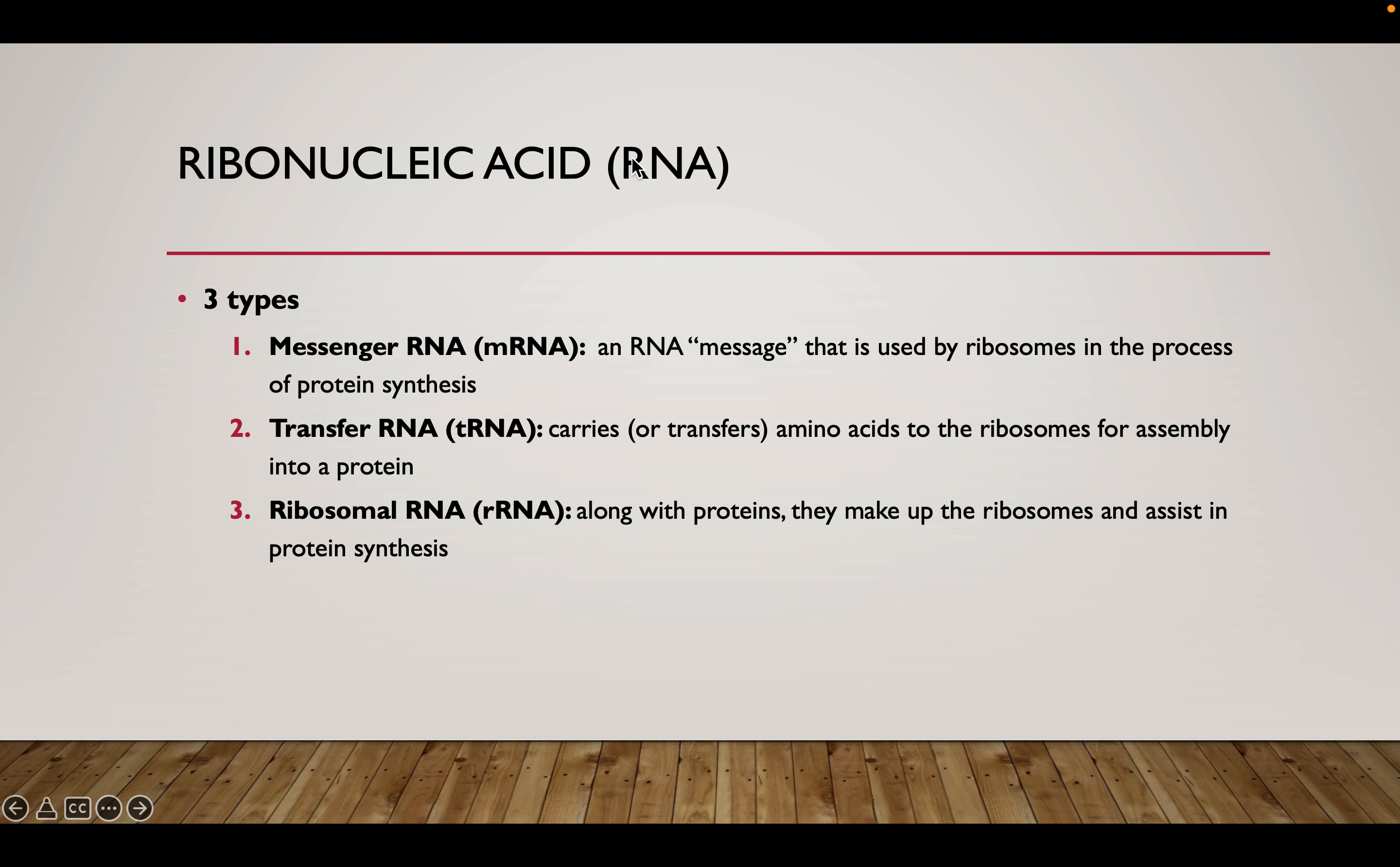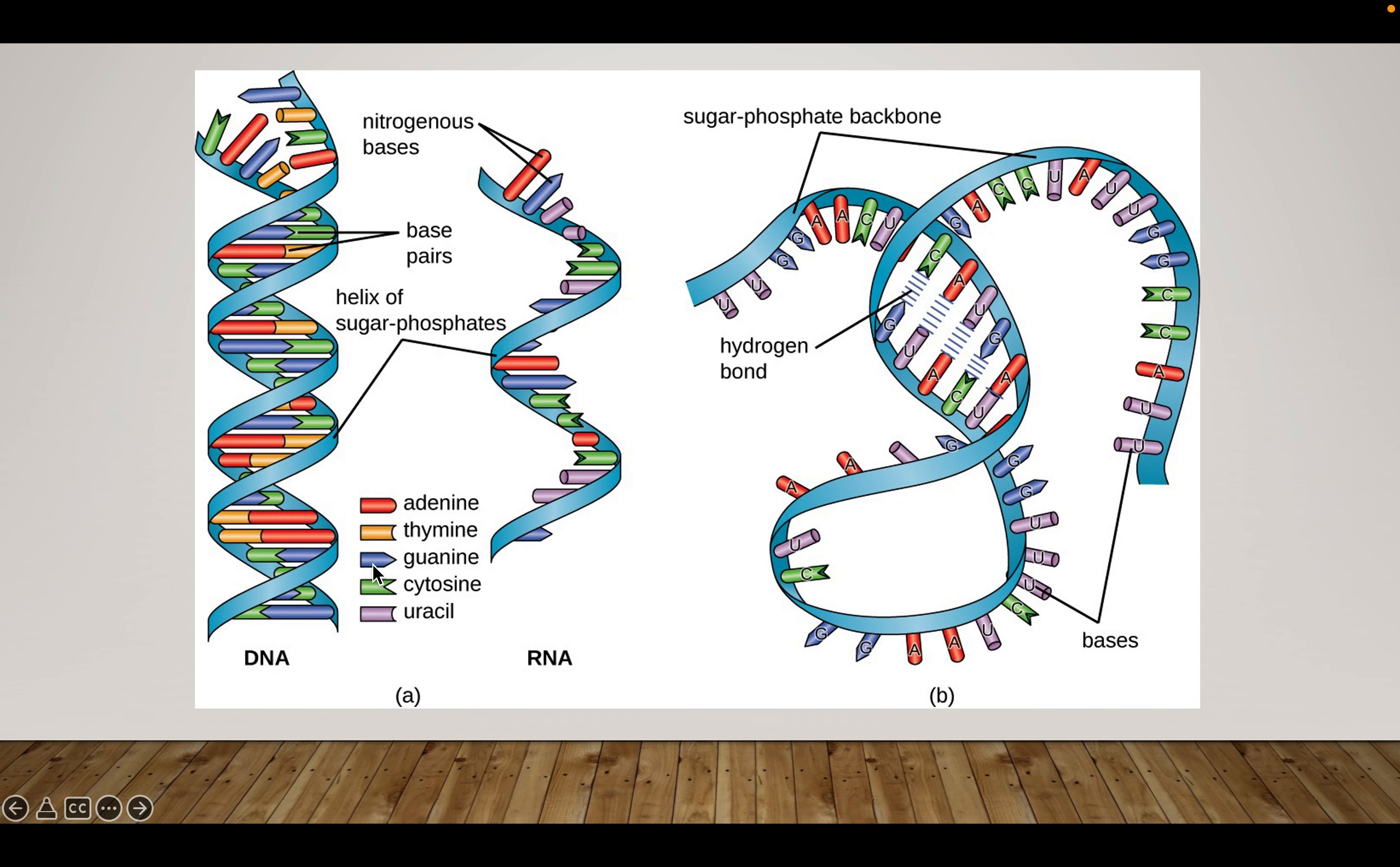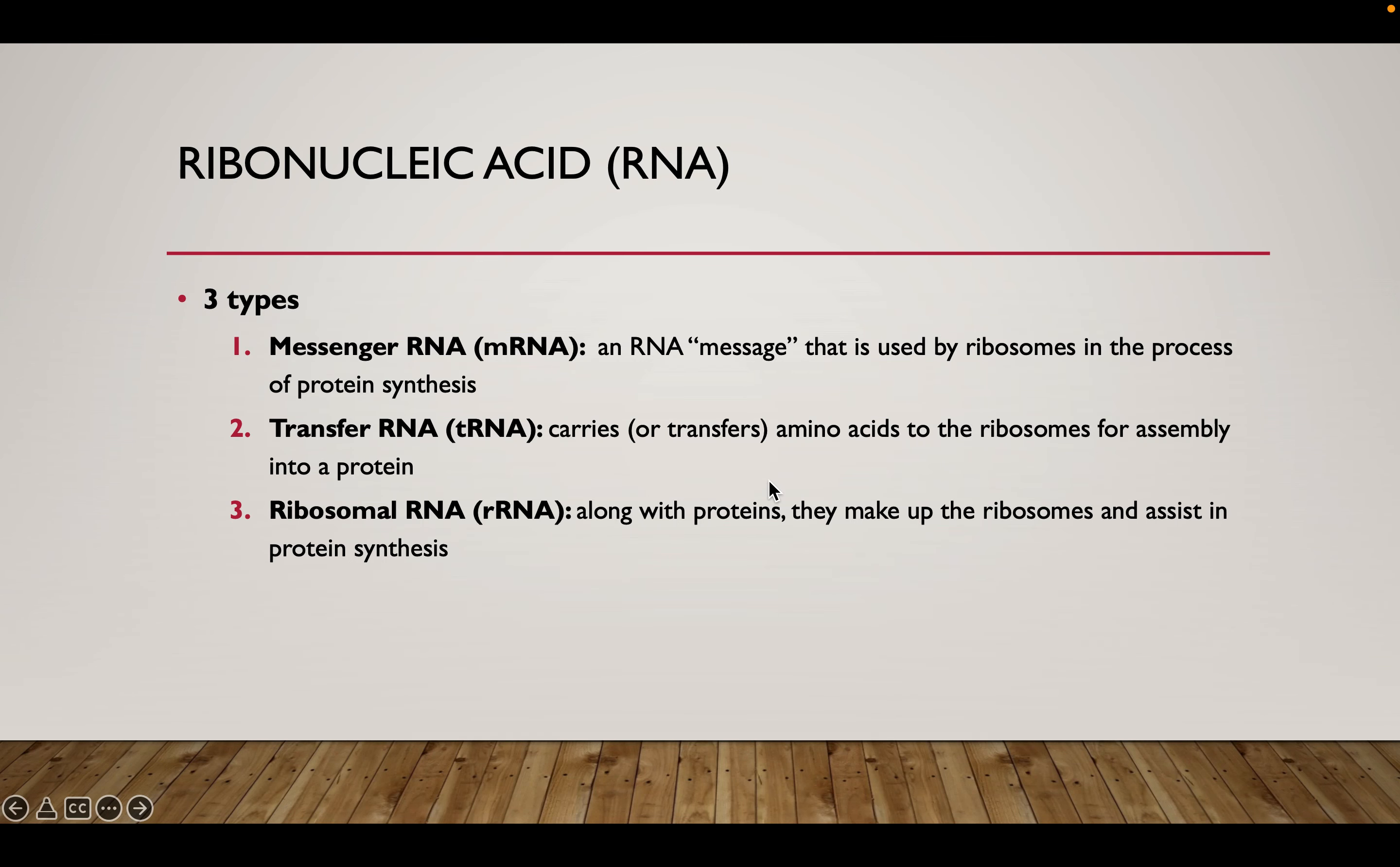So we have three different types of RNA. We have mRNA, tRNA, and rRNA. mRNA stands for messenger RNA. This is essentially what this strand is here. This is an mRNA strand with adenine uracil, guanine and cytosine with a ribose sugar.